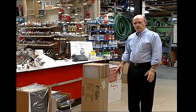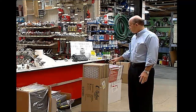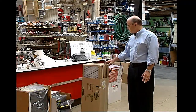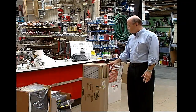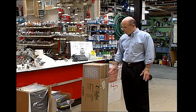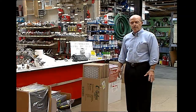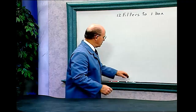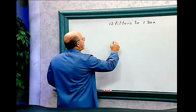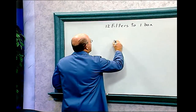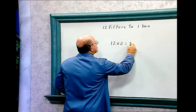I'd like to buy some filters in this hardware store. In a box there's 2, 4, 6, 8, 10, 12 — 12 filters to 1 box. If I buy 2 of these boxes, how many filters do I have? Let's do the math. There are 12 filters to a box; we bought 2 boxes, so it's 12 times 2 equals 24.